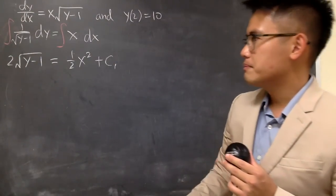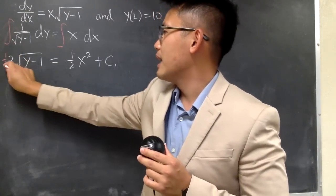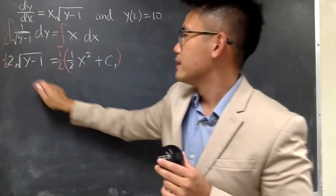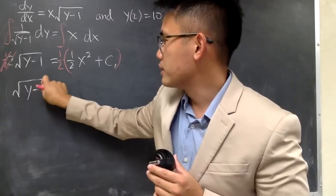Anyway, perhaps I will just get rid of the two first. So I will multiply everything by 1/2. I'll multiply everything by 1/2 so that this and that cancel and I have square root of y minus 1.